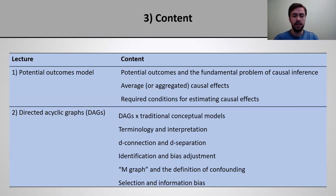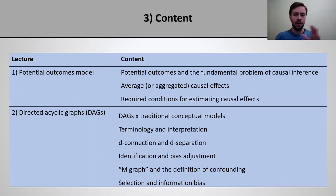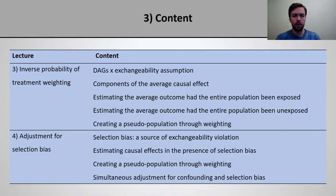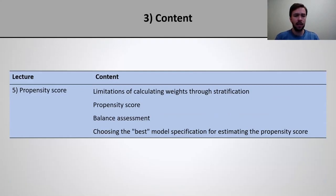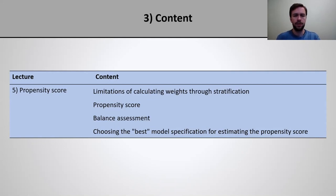The second lecture will be about directed acyclic graphs, or DAGs for short. We will first introduce what DAGs are and then show how DAGs can be used to define different sorts of bias — more specifically confounding, selection, and information bias. The third lecture will be about inverse probability of treatment weighting, an analytical tool for estimating causal effects, focusing on confounding. The fourth lecture will focus on selection bias. And the fifth and final lecture will be about the propensity score, a tool used for inverse probability of treatment weighting and other estimators for estimating causal effects when we have multiple covariates to adjust for to eliminate bias.